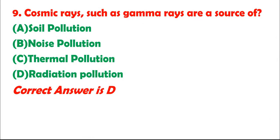Question 9: Cosmic rays, such as gamma rays, are a source of: A. Soil pollution. B. Noise pollution. C. Thermal pollution. D. Radiation pollution. Correct answer is D.